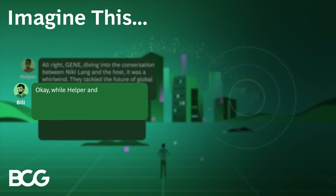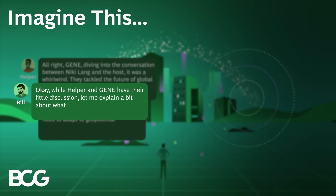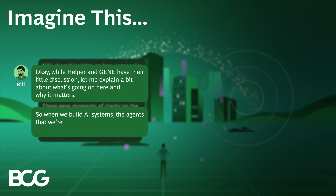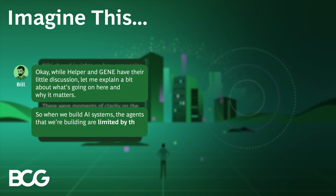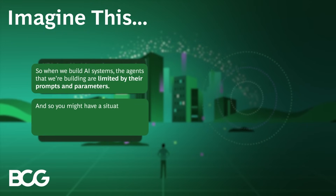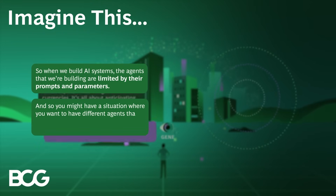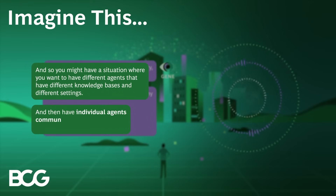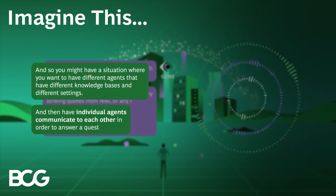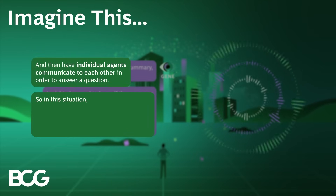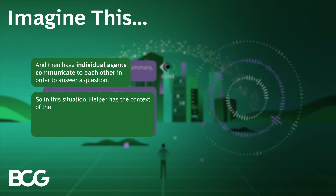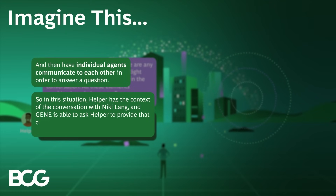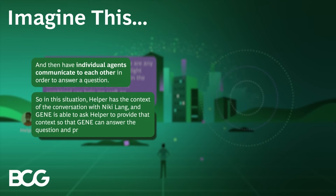Okay, while Helper and Gene have their little discussion, let me explain a bit about what's going on here and why it matters. So when we build AI systems, the agents that we're building are limited by their prompts and parameters. You might have a situation where you want to have different agents with different knowledge bases and different settings, and then have individual agents communicate with each other in order to answer a question. So in this situation, Helper has the context of the conversation with Nikki Lang, and Gene is able to ask Helper to provide that context so that Gene can answer the question.